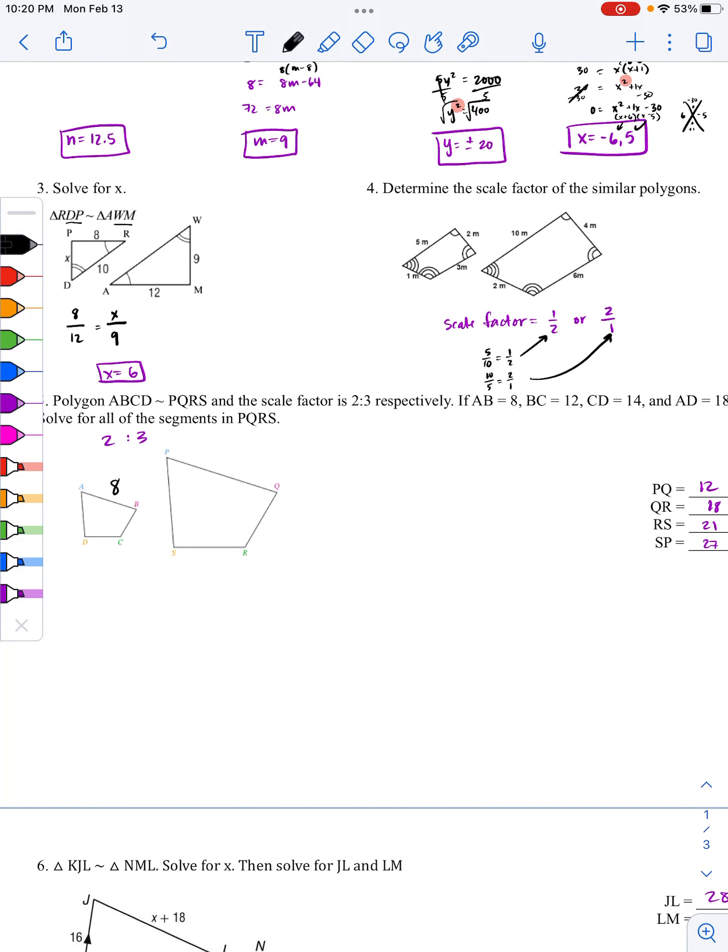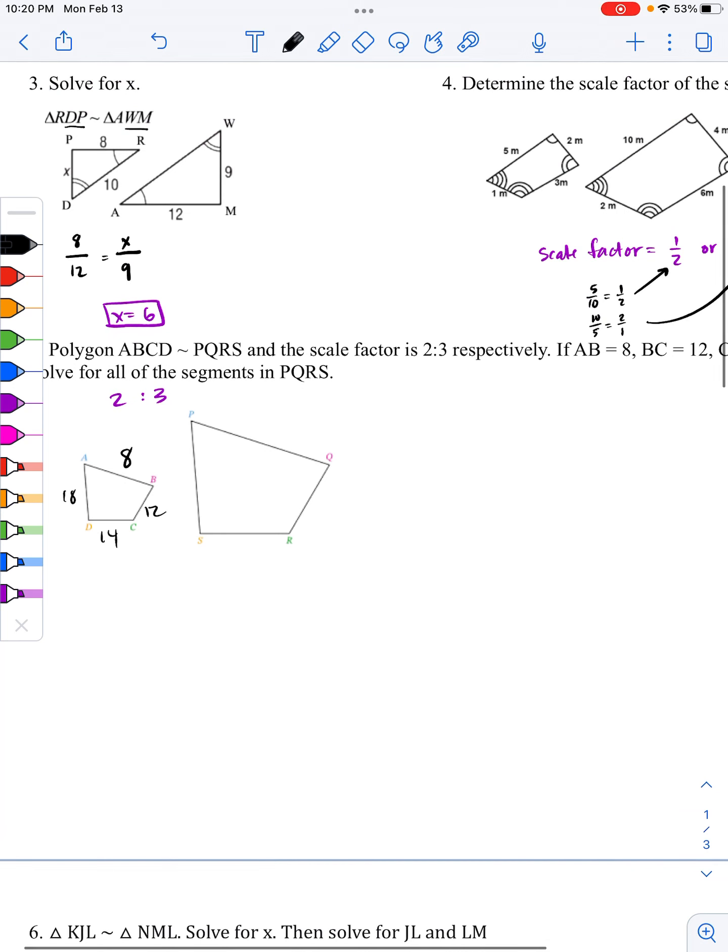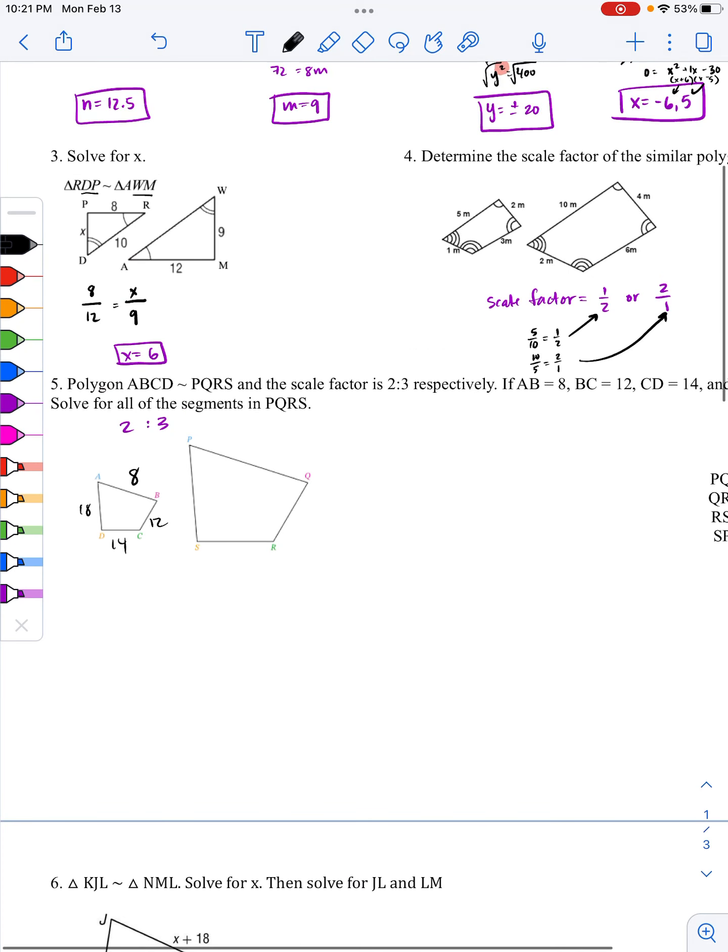AB has a value of 8, BC has a value of 12, CD 14, and then AD is 18. And if you notice, since it is a 2 to 3, that means everything here from left to right should get bigger.